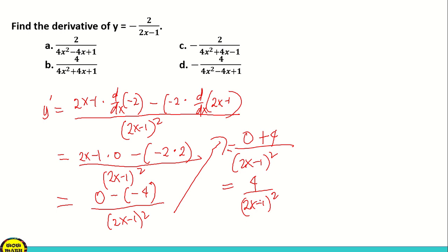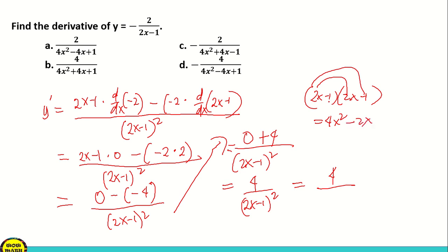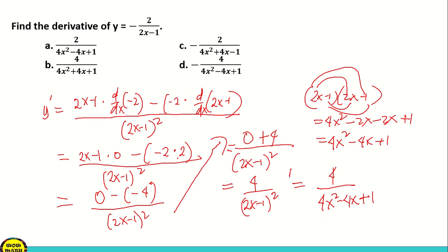We need to expand the denominator. 2x minus 1 times 2x minus 1: 2x times 2x is 4x squared, 2x times negative 1 is negative 2x, negative 1 times 2x is negative 2x, and negative 1 times negative 1 is positive 1. Combining similar terms, that is 4x squared minus 4x plus 1. So the expanded form of the denominator is 4x squared minus 4x plus 1. Based on the choices, that is letter D.